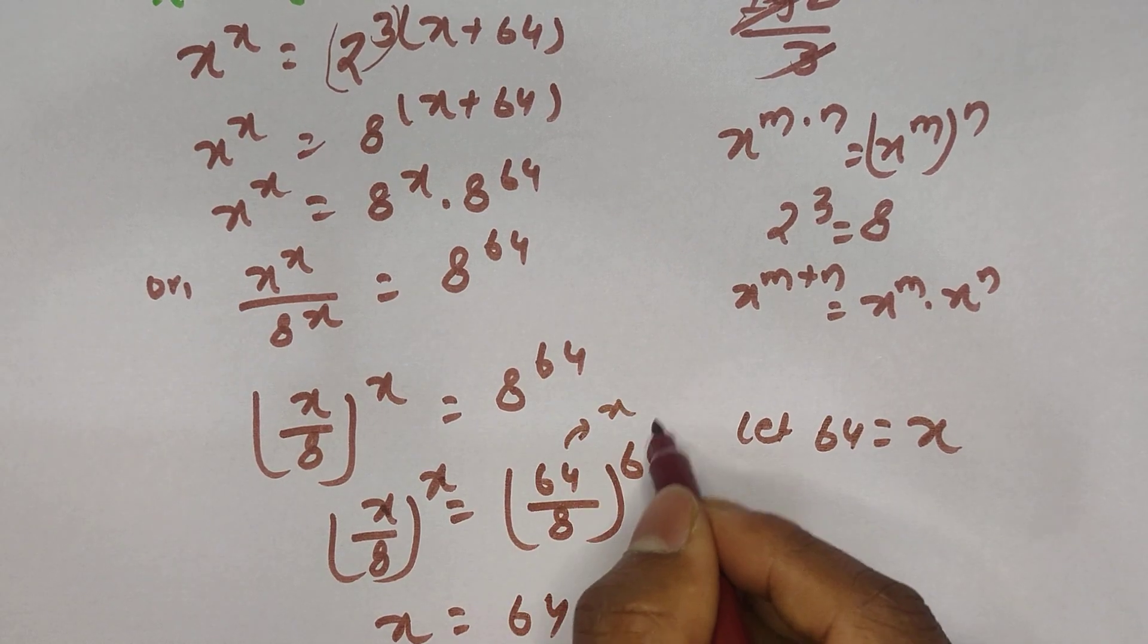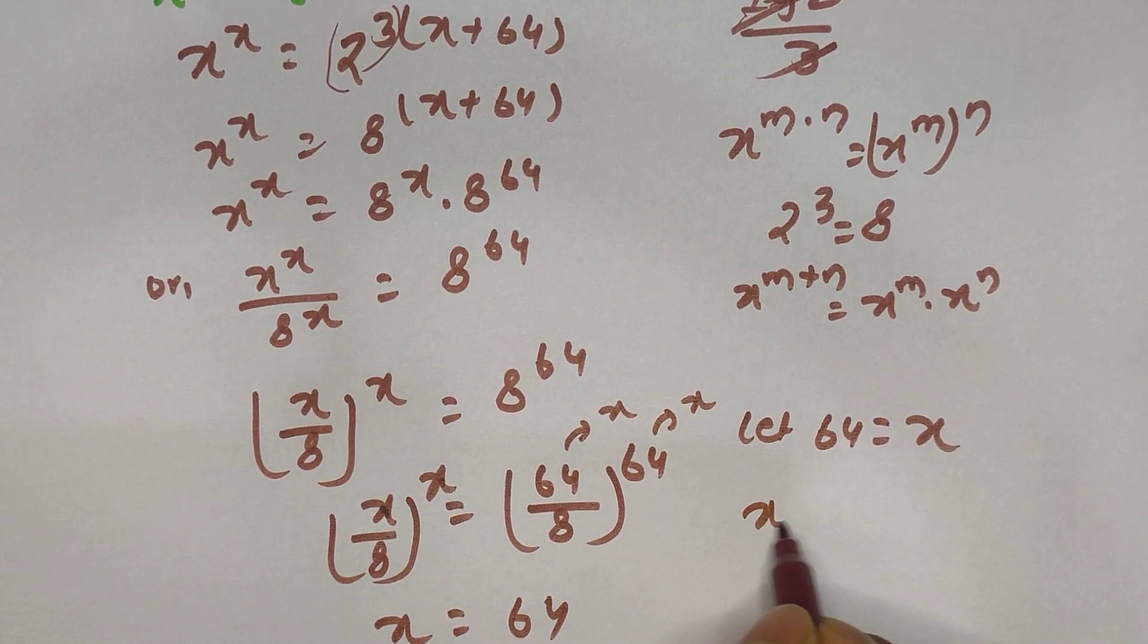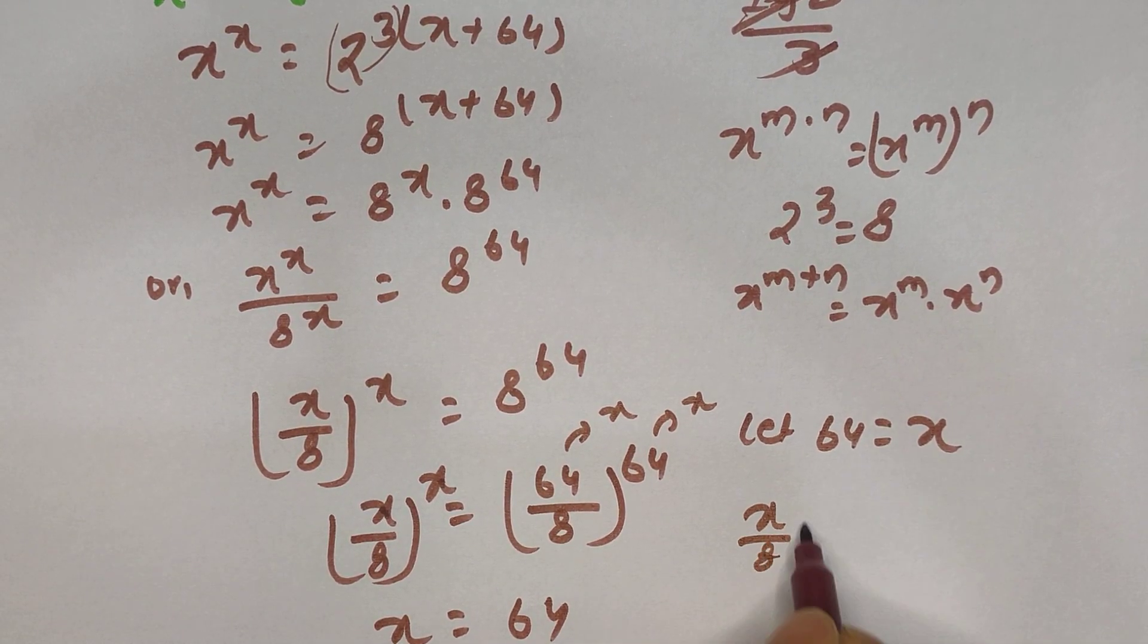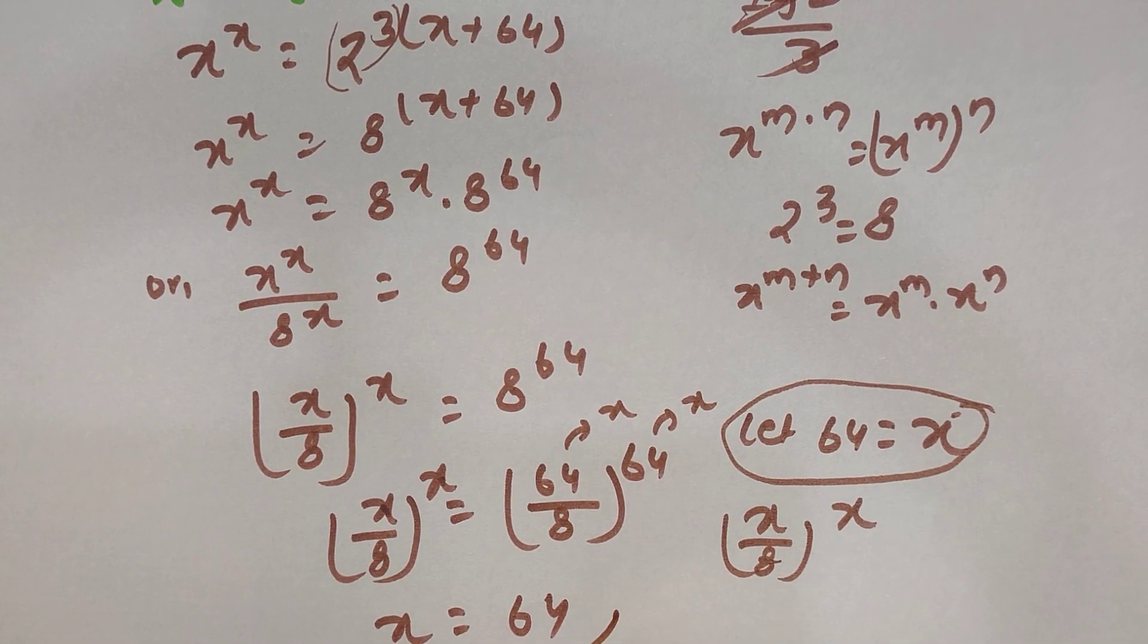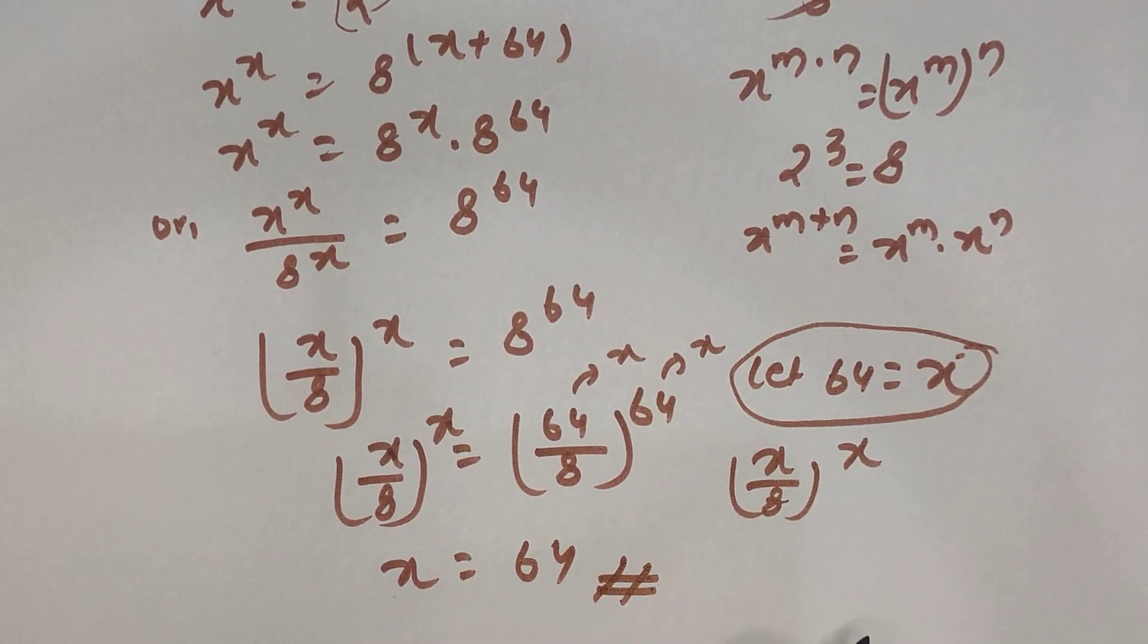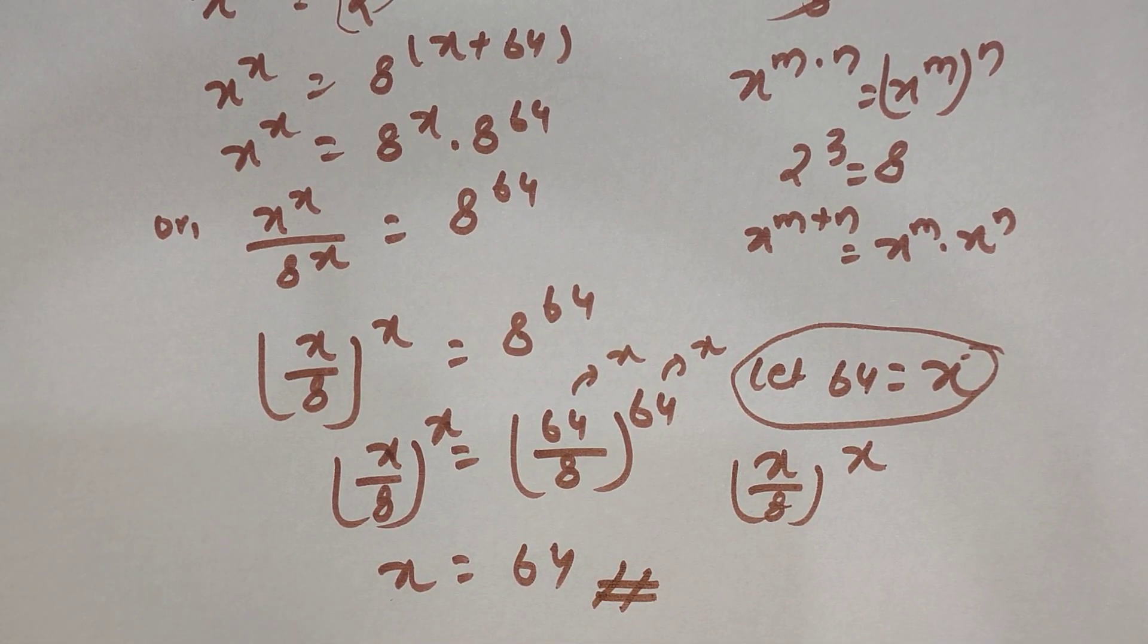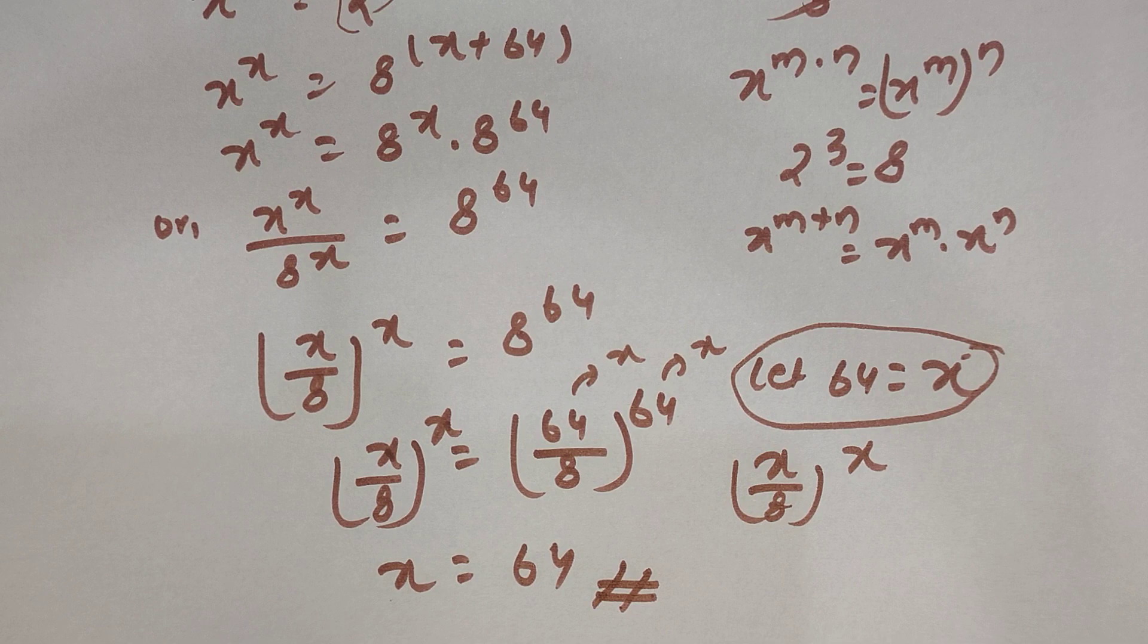We can also verify by letting 64 as x. Then you can replace this value as x, and this value also becomes x, so the right-hand side becomes x divided by 8 to the power x. Our assumption is right, so we can write the value of x as 64, which is our final answer. Hope you understand this question clearly. If you have any doubt, please write in the comment section. Thank you, bye bye.